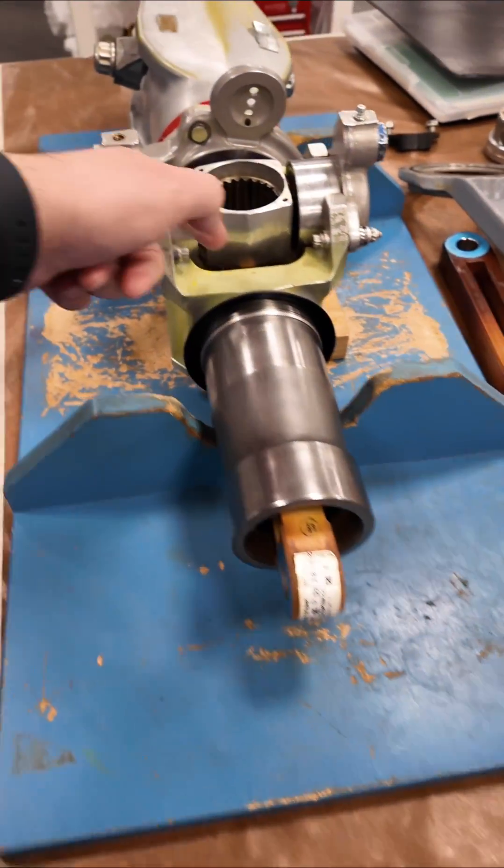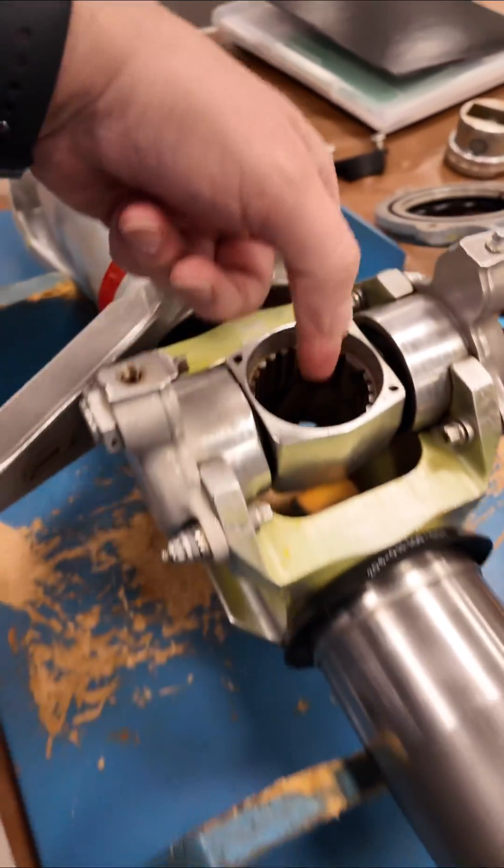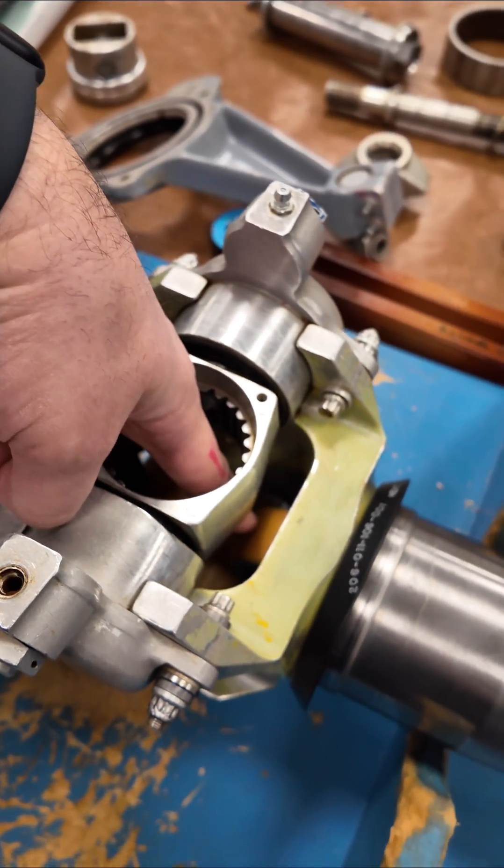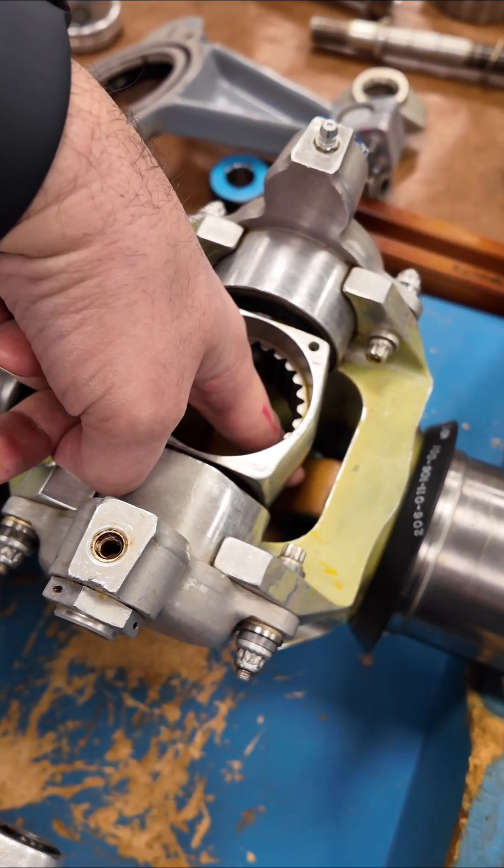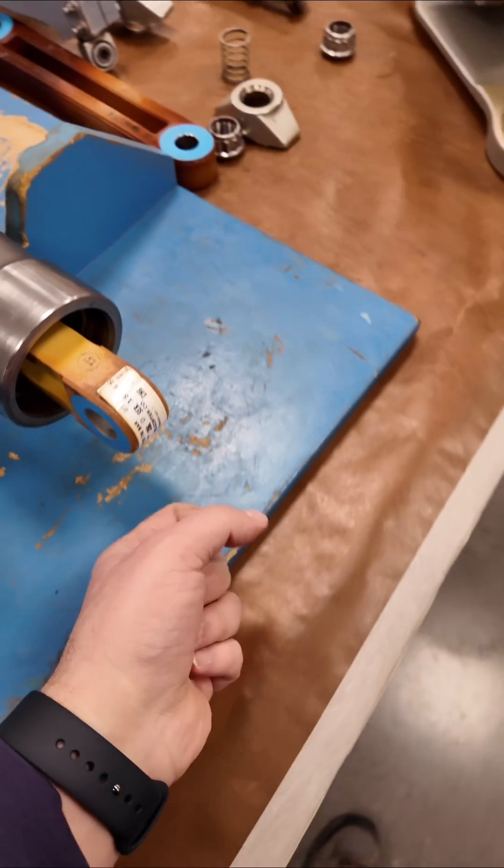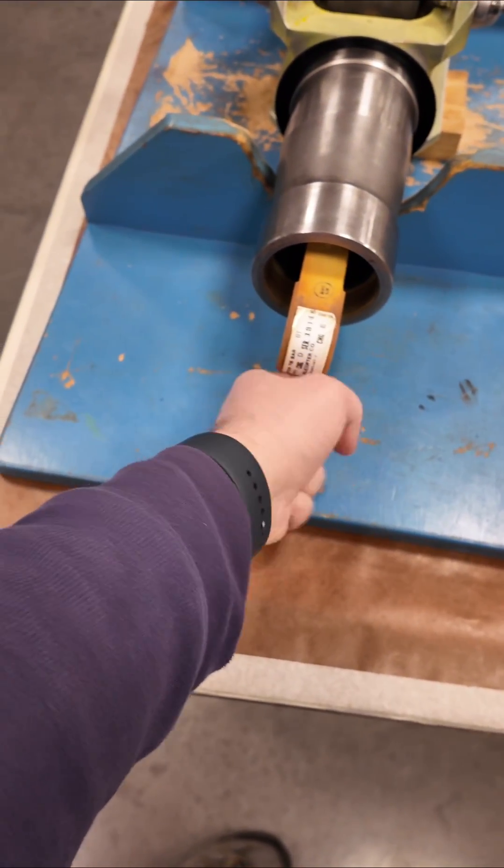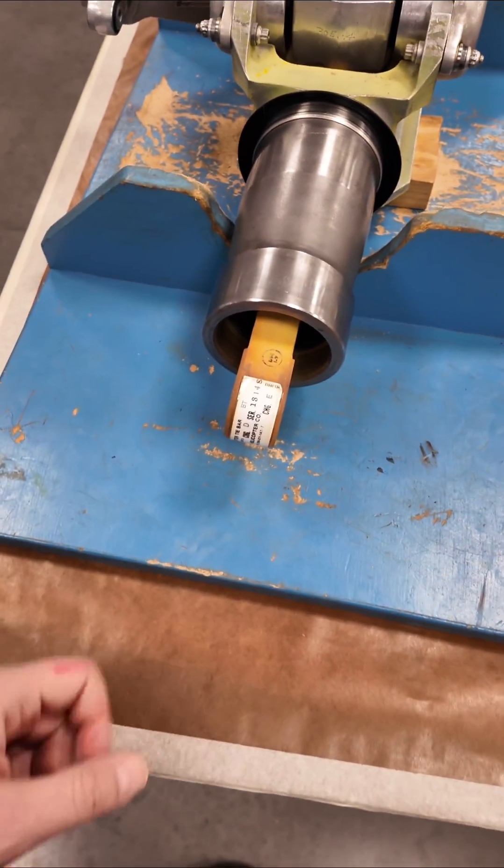This end of the tension torsion strap is fixed. It cannot move or rotate. This end twists due to the flexibility built into the TT strap.